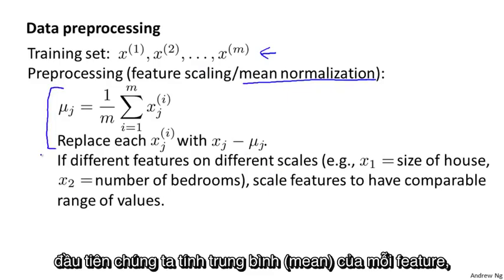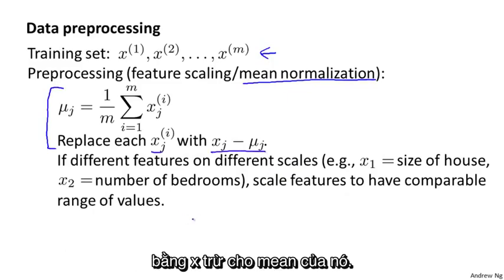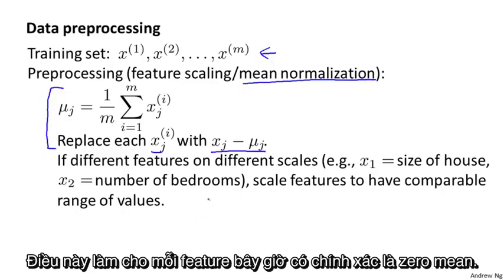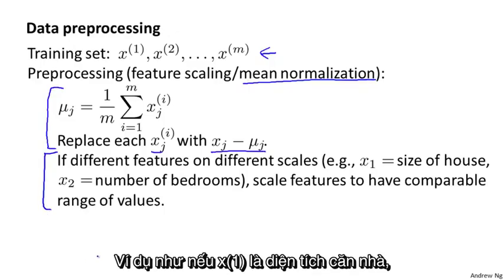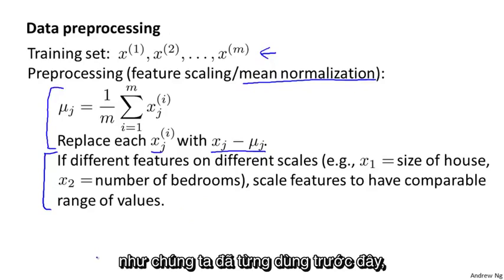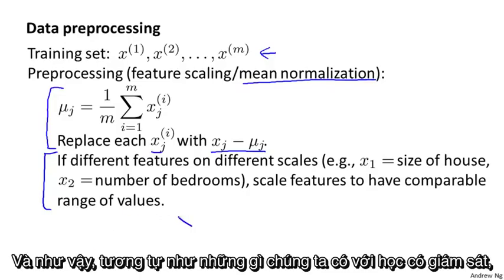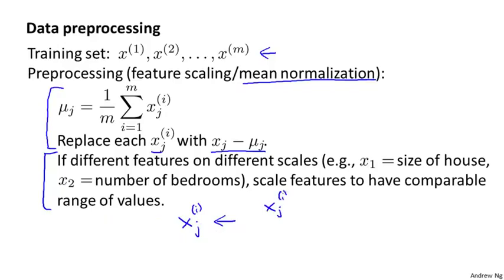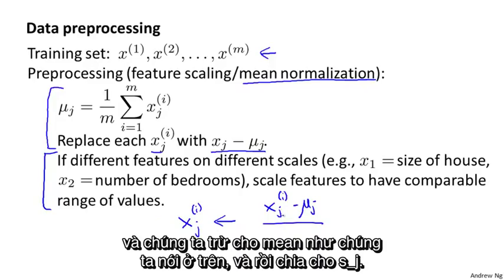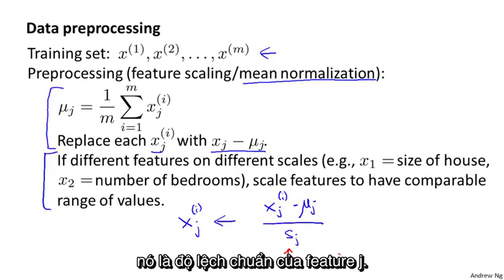For mean normalization, we first compute the mean of each feature, and then we replace each feature x with x minus this mean, making each feature have exactly zero mean. Then, if the different features have very different scales — for example, if x1 is the size of a house and x2 is the number of bedrooms — we also scale each feature to have a comparable range of values. We take x_i subscript j, subtract off the mean, and divide by sj, where sj is some measure of the range of values of feature j — either the max minus min value, or more commonly, the standard deviation of feature j.